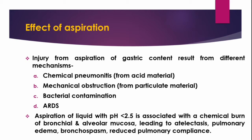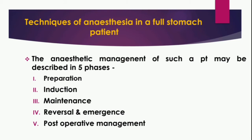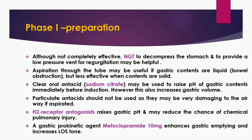The anesthetic management of such a patient may be described in five phases: preparation, induction, maintenance, reversal and emergence, and postoperative management. In phase one — preparation — although not completely effective, a nasogastric tube to decompress the stomach and to provide a low-pressure vent for regurgitation may be helpful.